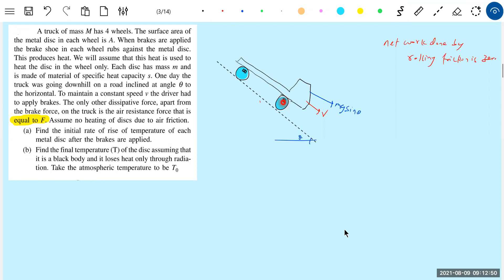Now the decrease in the rate at which gravitational potential energy decreases, mg sin theta into V, that should be equal to power dissipated in the brakes plus power dissipated to overcome the air resistance. Air resistance directly given F into V.